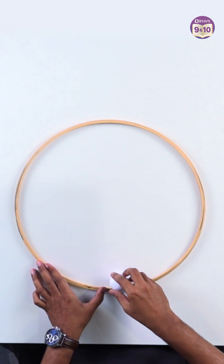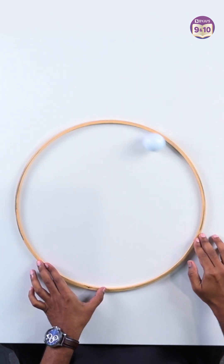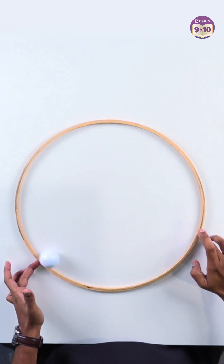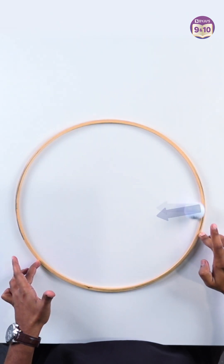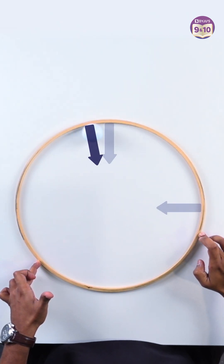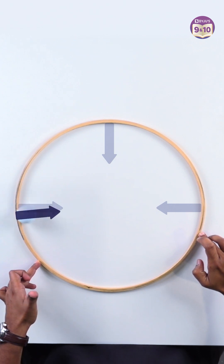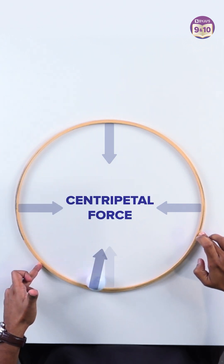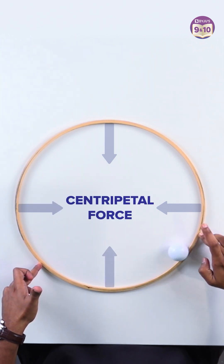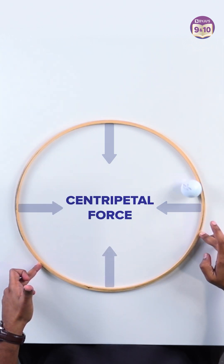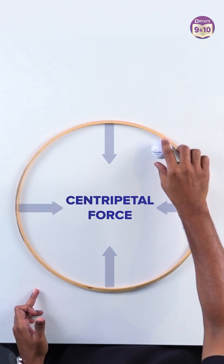Notice what happens when I make sure this ball moves in a circle inside the ring. The walls of the ring are pushing the ball towards the center — we call it the centripetal force — and this force makes sure the ball moves in a circle.